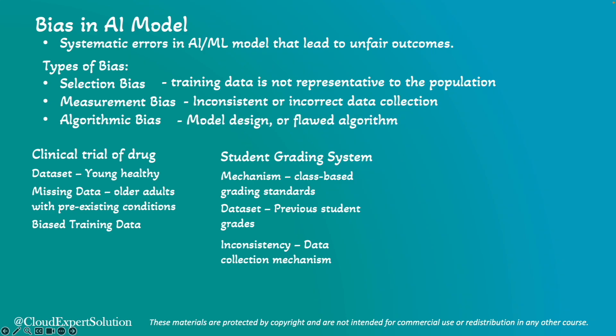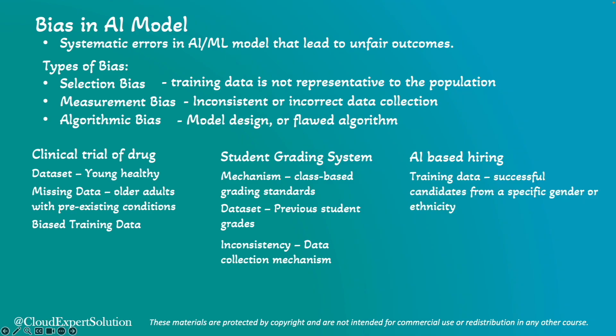Next, algorithmic bias occurs when the design or training process of the model introduces bias, often due to biased training data or flawed algorithms. For example, consider an AI-based hiring system trained on data that includes more successful candidates from a particular gender or ethnicity. The algorithm might unfairly favor similar candidates in the future, perpetuating existing bias.